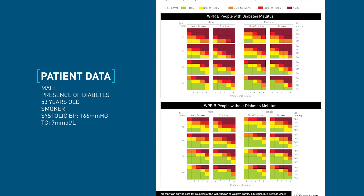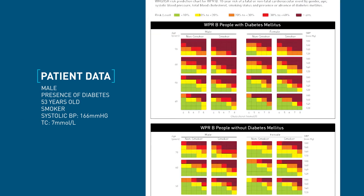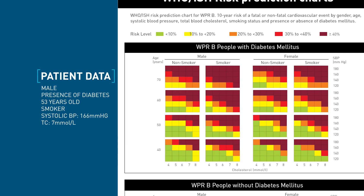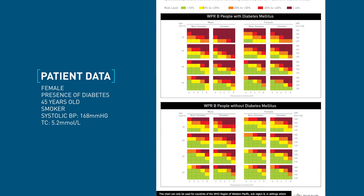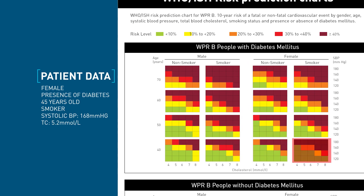Another example is an individual with diabetes, male, age between 50 and 59 years, smoker, with systolic blood pressure of 166 mmHg and total cholesterol of 7 millimoles per liter — the deep red or maroon cell indicates a risk of more than 40 percent for developing a heart attack or stroke. A third example is an individual with diabetes, female, 45 years old, smoker, systolic blood pressure of 168 mmHg, no cholesterol test but using 5.2 millimoles per liter — the orange indicates a risk of 20 to 30 percent.